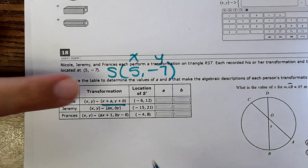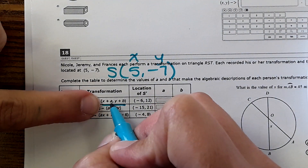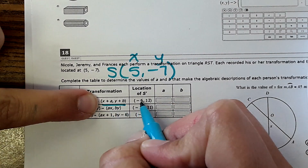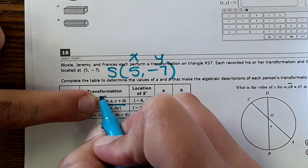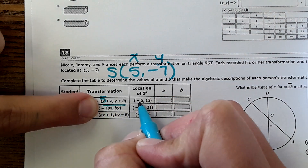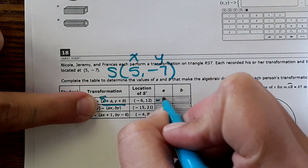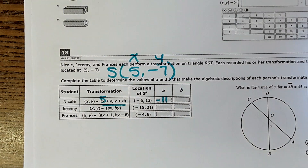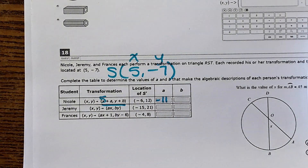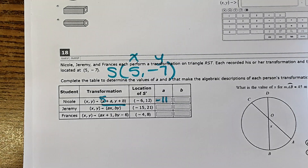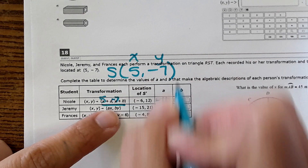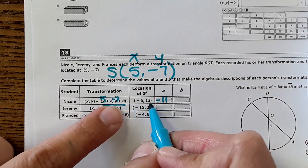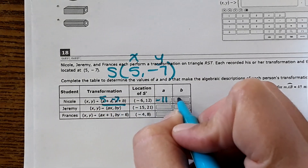For the translation: X plus what equals negative 6? The X is 5, so 5 plus what equals negative 6 — that would be negative 11. For Y: negative 7 plus what equals 12 — that would be 19.